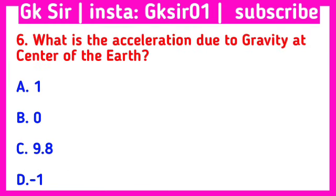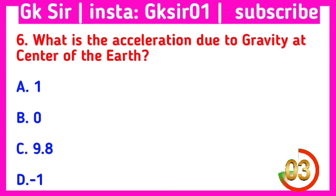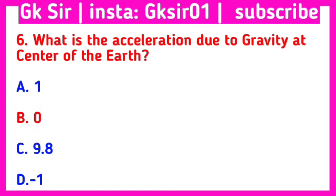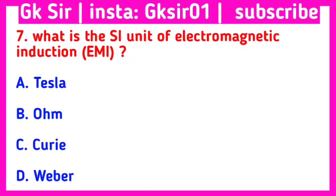Question number 6. What is the acceleration due to gravity at the center of the earth? Option A: 1, Option B: 0, Option C: 9.8, Option D: minus 1. The correct answer is Option B: 0.